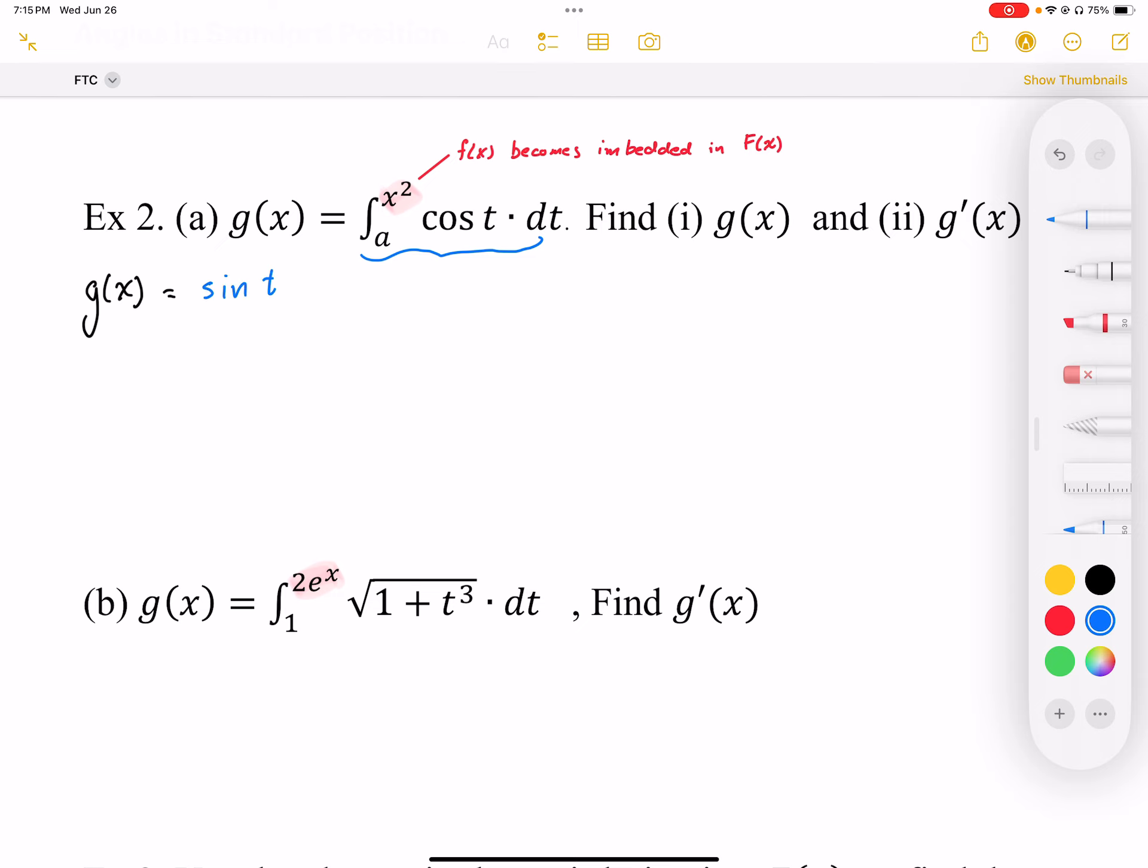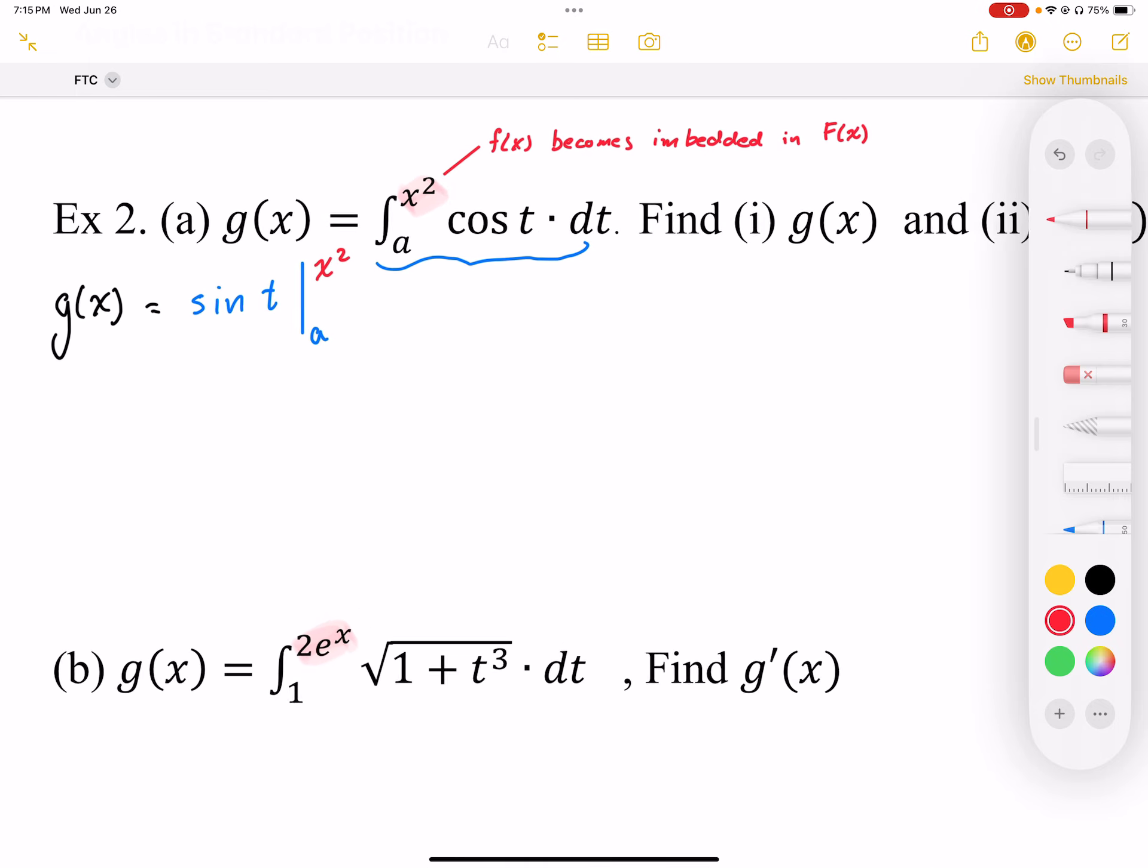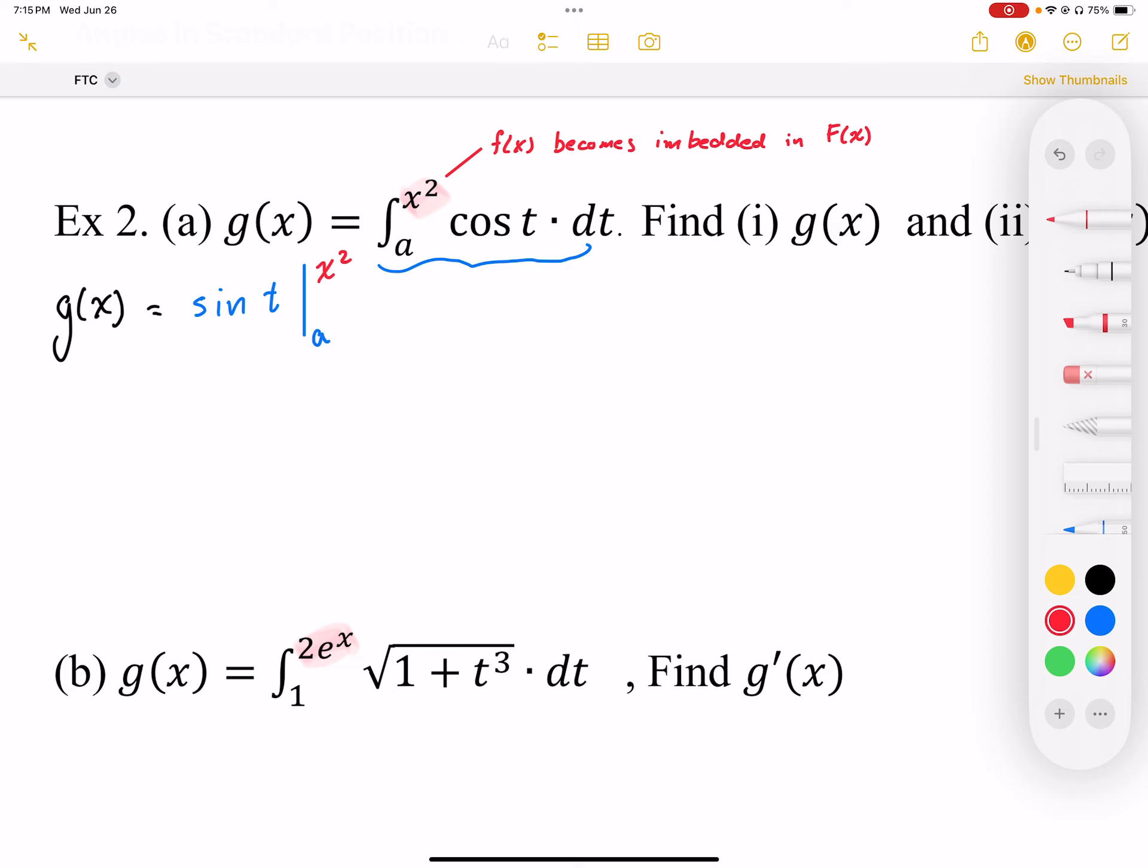I'm going to end up with sine t and I'm going to embed my bounds. I'm going to have my bounds here, a, and my end bound becomes not x but a function of x, or x squared.